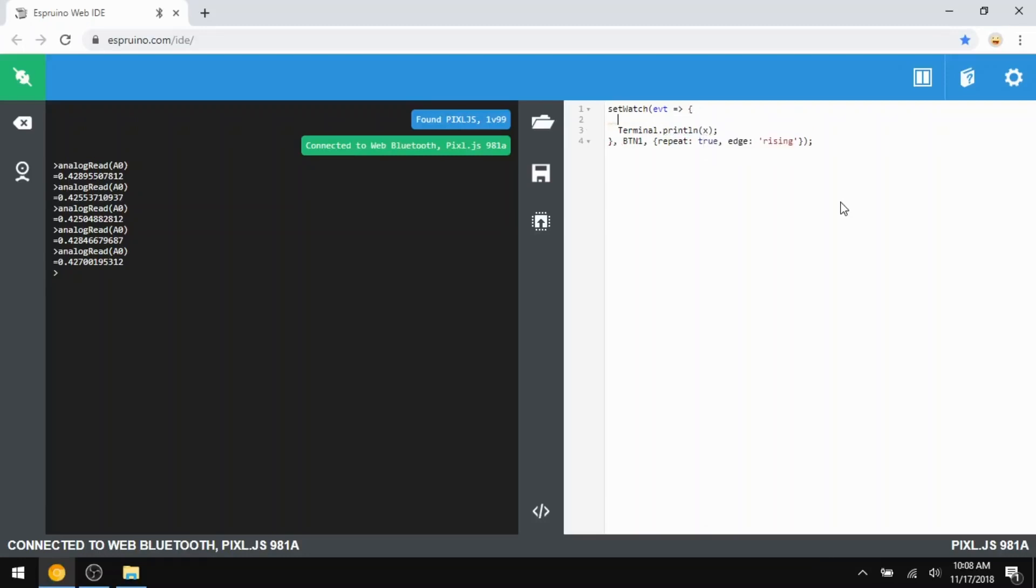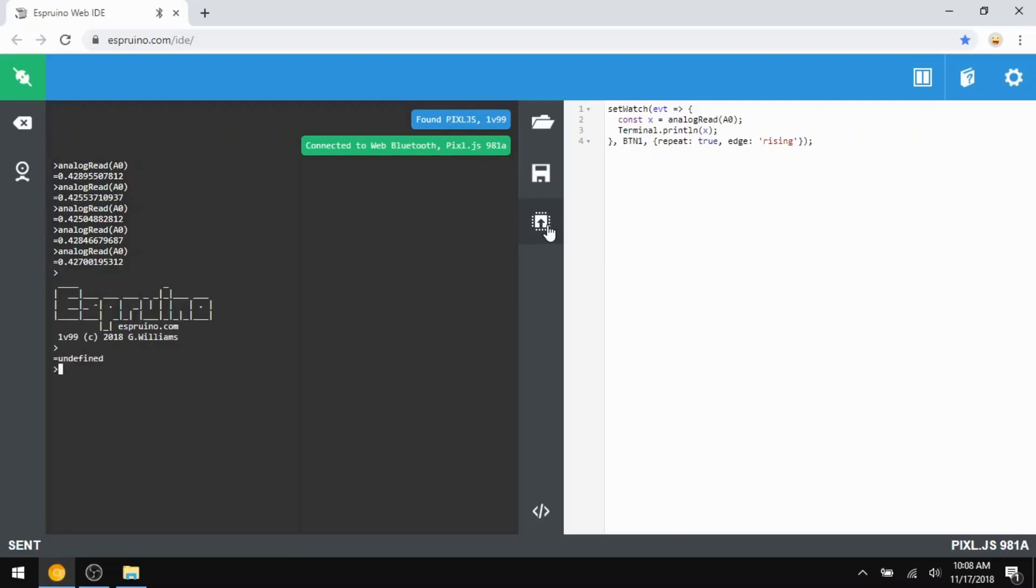All I have to do now is set the value of x to be the result of calling analog read on that pin A0. Now whenever button 1 is pressed, it will call this function, which prints the analog value of pin A0 to the Pixel screen. Cool! Now I'll just send that code over to the Pixel, and then call the save function to flash everything into memory. That way I can turn the Pixel off and on, and it'll still have all of the code loaded into it.